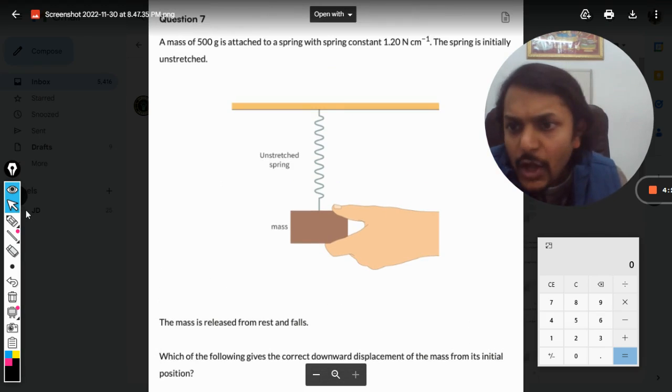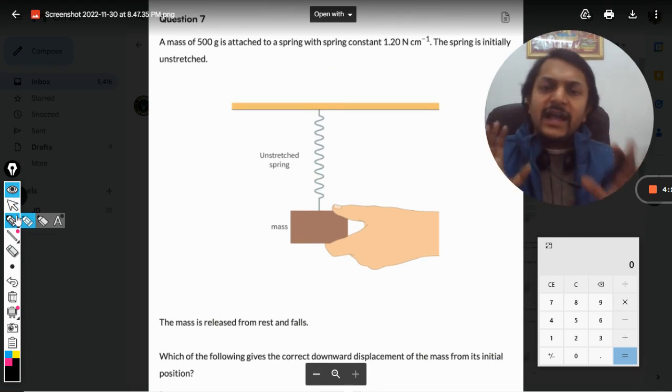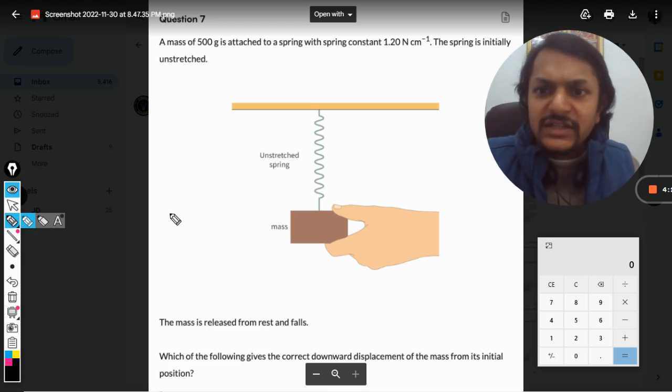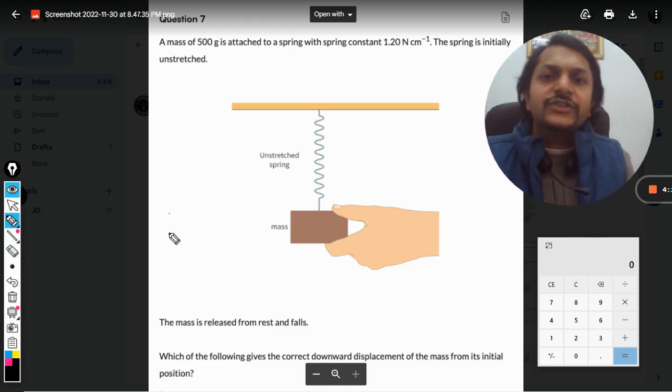There are two things that are acting on the system. The first question is: what is the lowest point? So first of all, try to understand what is actually happening here.